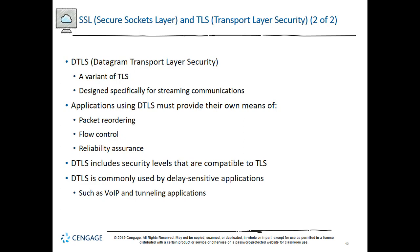After the browser and server have agreed on the terms of encryption, the secure channel is in place and they begin exchanging data. A variant of TLS is DTLS, Datagram Transport Layer Security, designed specifically for streaming communications. As the name implies, it relies on UDP instead of TCP, which minimizes delays. However, applications using DTLS must provide their own means of packet reordering, flow control, and reliability assurance. DTLS is commonly used in delay-sensitive applications such as VoIP and tunneling applications like VPN.